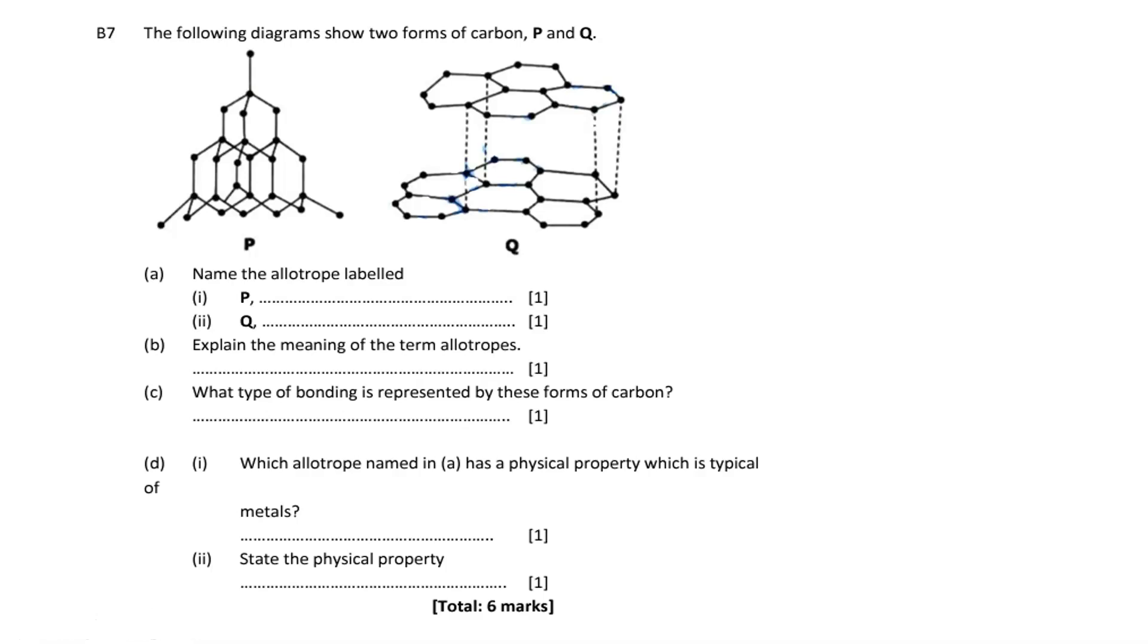Welcome to this platform. In this video, let us answer this question. As we can see, the question is coming from NANMET, and the focus is on carbon. The question reads: the following diagram shows two forms of carbon, P and Q.